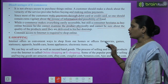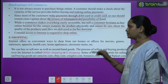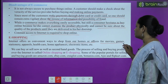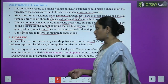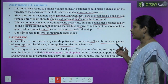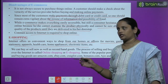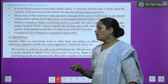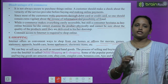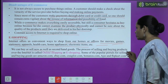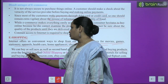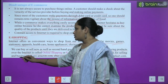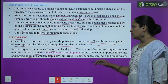E-shopping: The internet offers us convenient ways to shop from our homes. Sitting at home or in the office, we can shop, watch movies, play games, buy stationery, apparels, health items, household goods, and electronic items. We can buy or sell new as well as second-hand goods. This process of buying and selling on the internet is called online shopping or e-shopping. Some popular portals are amazon.com, ebay.com, craiglist.com, bonanza.com, and flipkart.com.